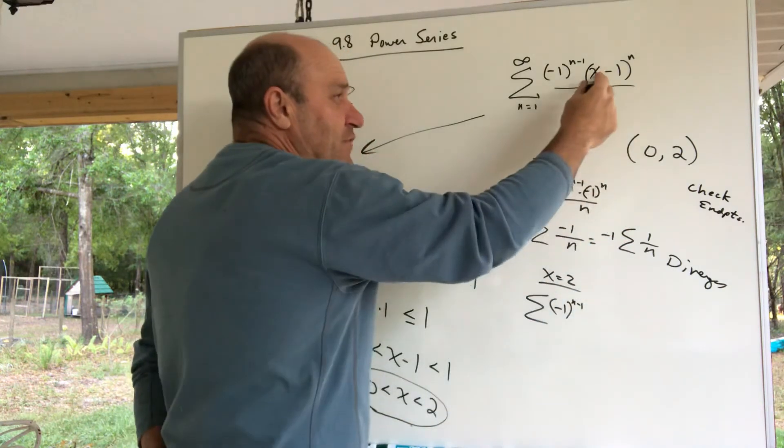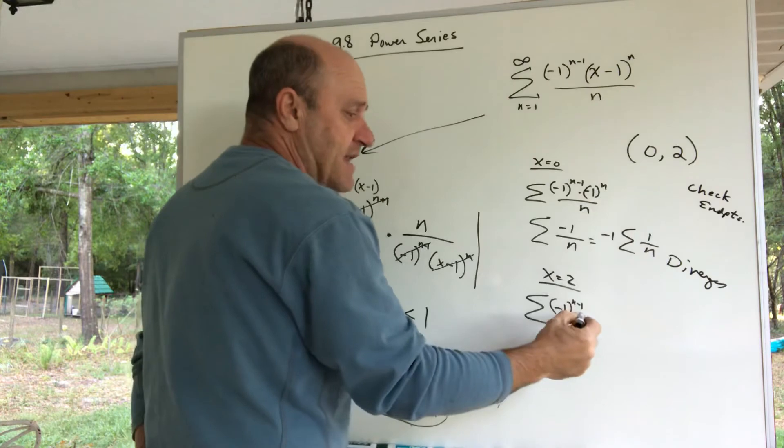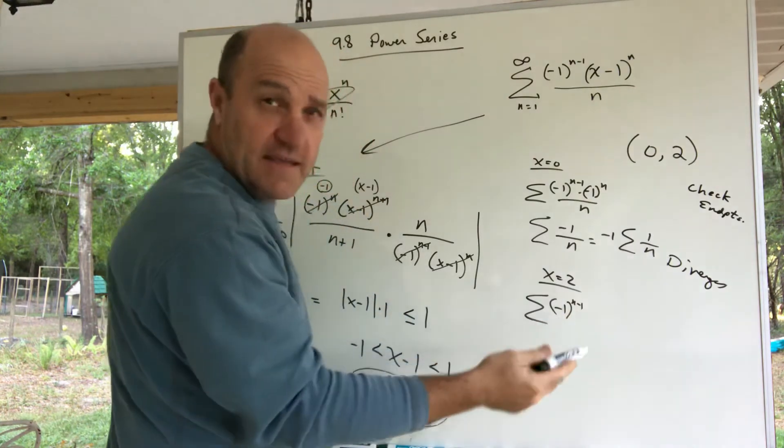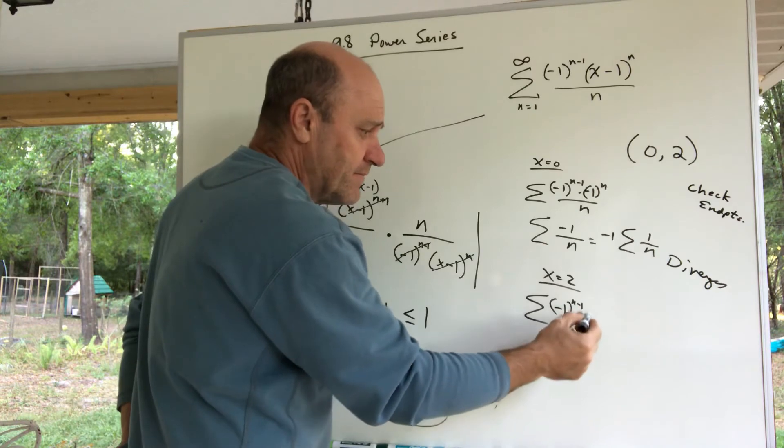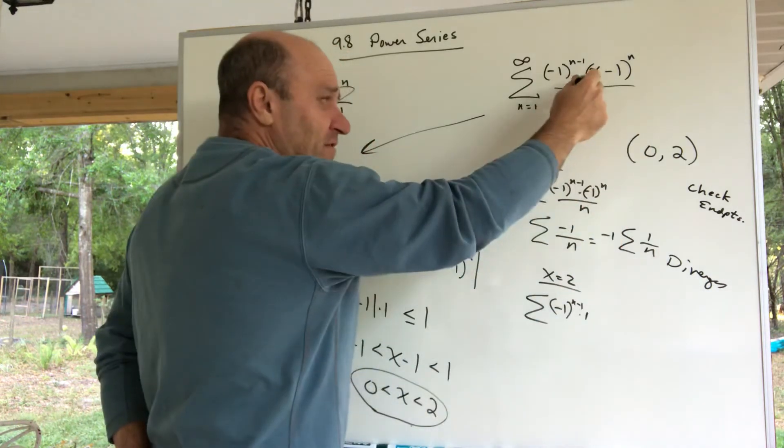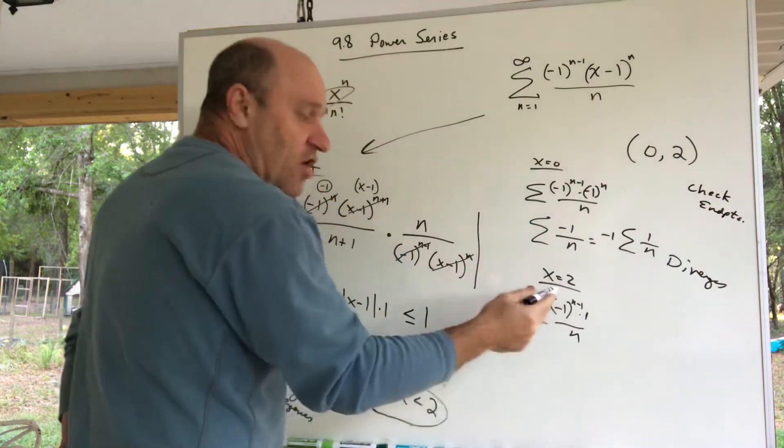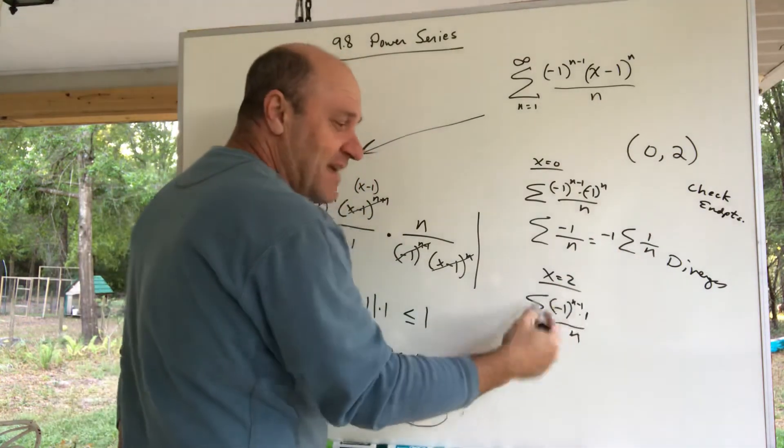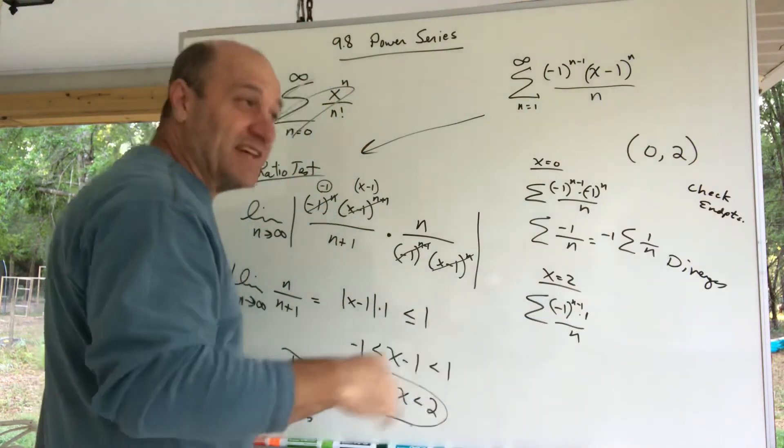When I plug in the 2, 2 minus 1 is just a 1 to the n. A 1 to the n is just always a 1. Plug in the 2 for x, and I'm looking at this series. Well, this is an alternating harmonic series.